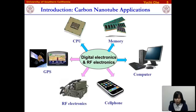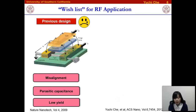During the past two decades, people have made a lot of efforts in digital electronics and radio frequency electronics, and a lot of progress has been made. In my talk, I will focus on the radio frequency electronics application of carbon nanotubes. Previously, people usually used the parallel plate structure for carbon nanotube RF transistors, but this structure has some problems, including misalignment, large parasitic effects, and relatively low yield. As a result, these disadvantages hindered the further advance of carbon nanotube RF electronics.